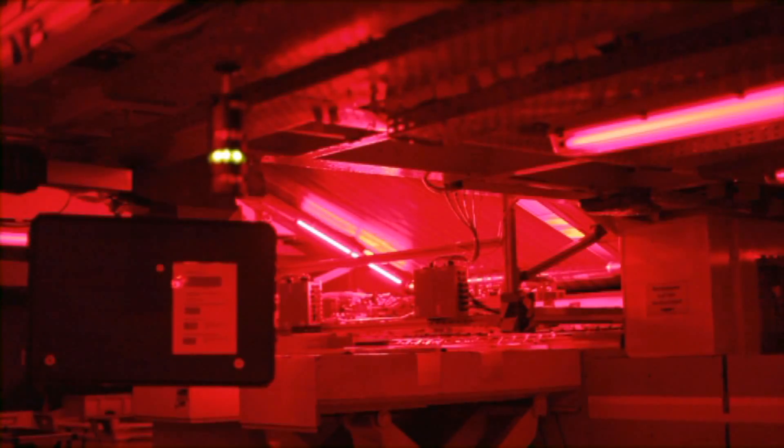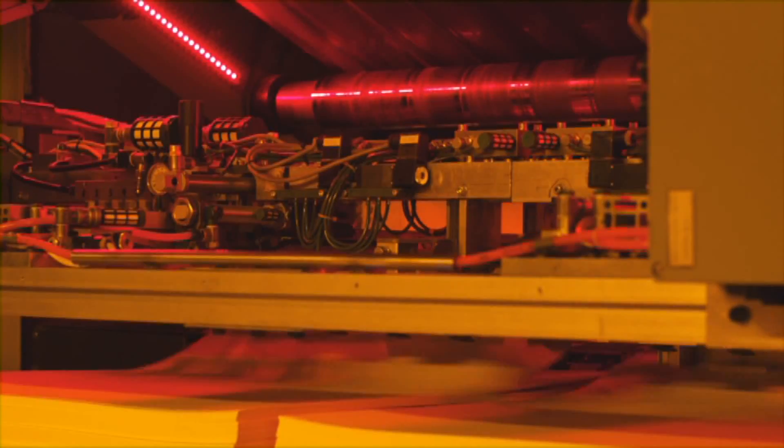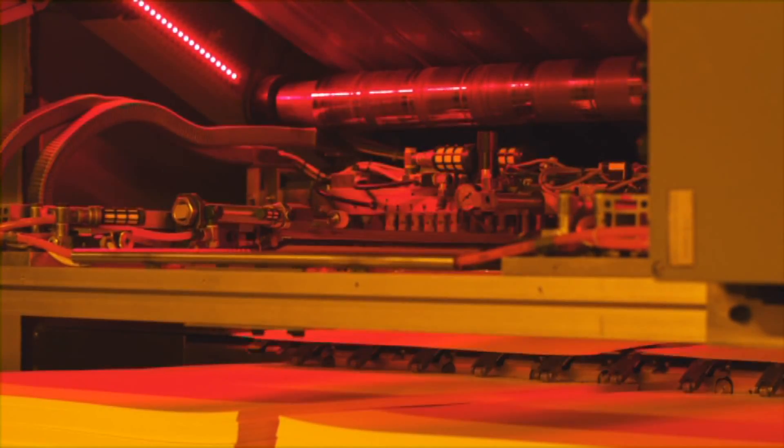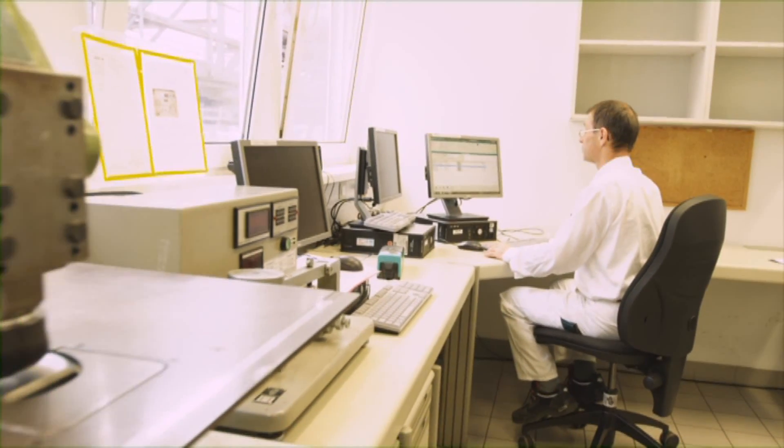Eventually we arrive at the actual coating section of the production line where a light or thermal sensitive coating is applied to the aluminum. It is this layer that will form the final to be printed image or text.